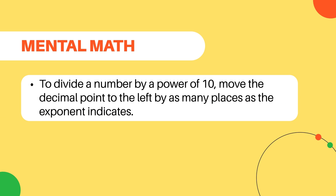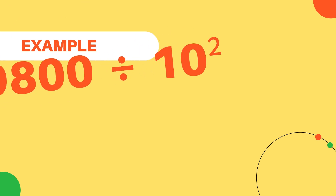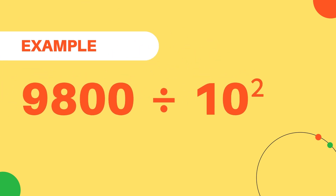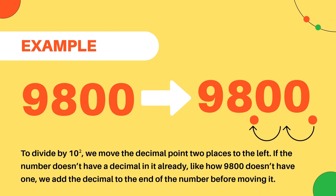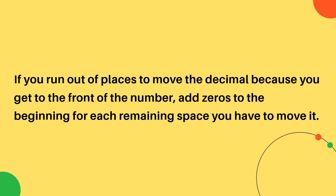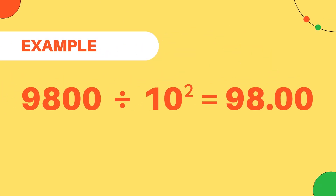To divide a number by a power of 10, move the decimal point to the left by as many places as the exponent indicates. For example, divide 9,800 by 10 to the power of 2. To divide by 10 to the power of 2, we move the decimal point two places to the left. If the number doesn't have a decimal in it already, like how 9,800 doesn't have one, we add the decimal to the end of the number before moving it. Also, if you run out of places to move the decimal because you get to the front of the number, add zeros to the beginning for each remaining space you have to move it. So, the final solution after we move the decimal point left is 9,800 divided by 10 to the power of 2 equals 98.00.